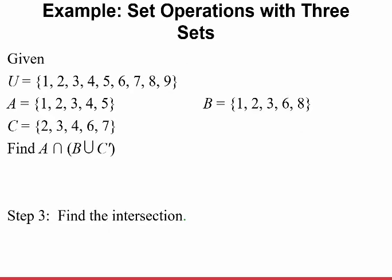Let's start with some set operations with three sets. We're given the following: the universal set is {1, 2, 3, 4, 5, 6, 7, 8, 9}. Set A is {1, 2, 3, 4, 5}. Set B is {1, 2, 3, 6, 8}. Set C is {2, 3, 4, 6, 7}.